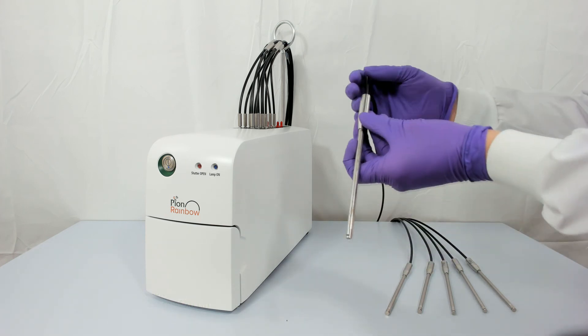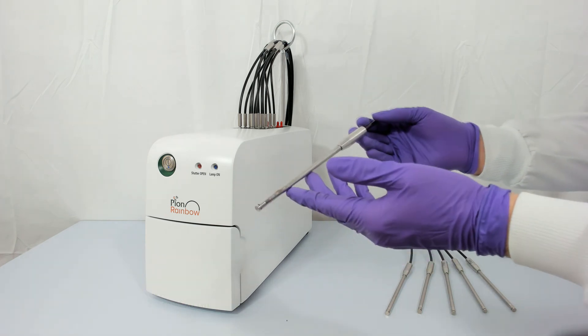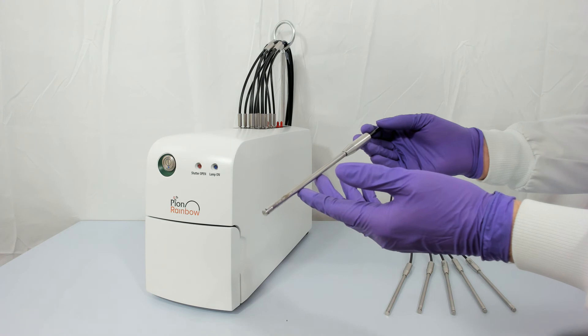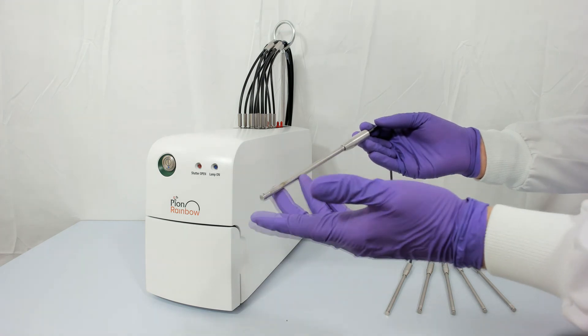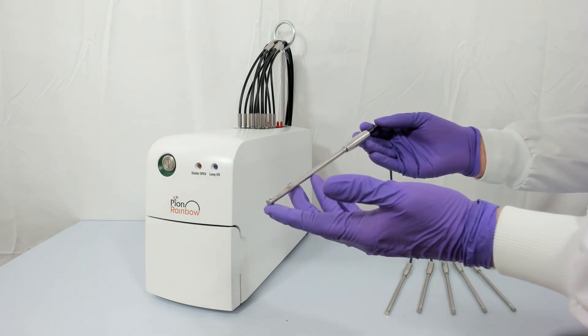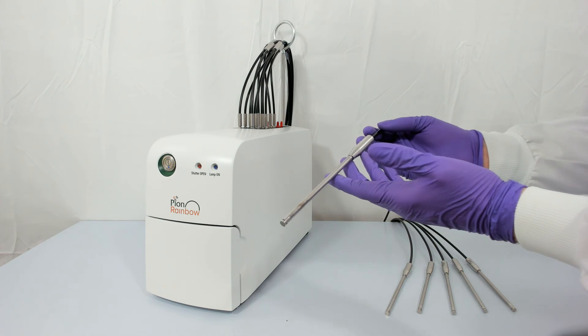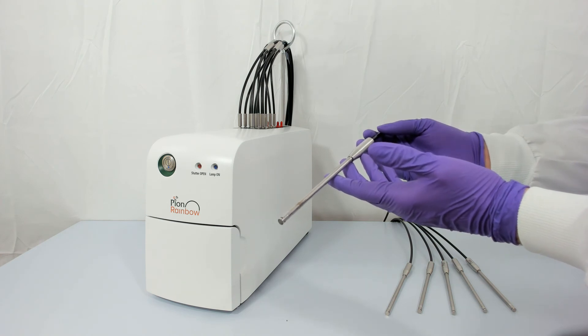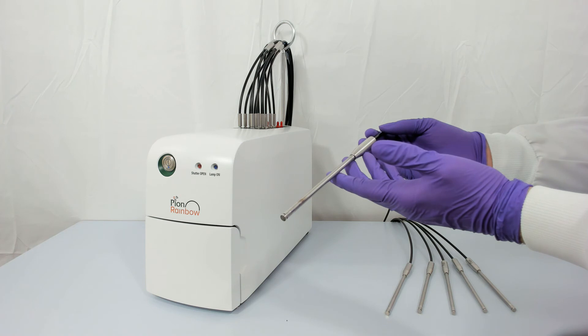At the end of the fiber optic cable is the metal immersion probe, on the end of which is a screw fitting for variable path length tips, which are available in 20, 10, 5, 2 and 1 mm lengths.